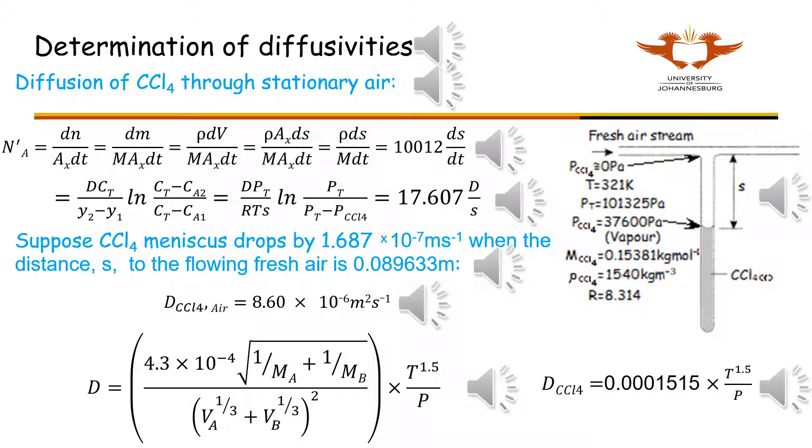If you assume that the value contained by the big round brackets is constant, then you can propose an equation for the diffusivity of carbon tetrachloride that holds for all temperatures and pressures. Check this equation by using the temperature of 321 kelvin and pressure of 101,325 pascals for T and P. Try to set up this equation by yourself by determining the value of the constant, which is equal to 0.0001515.